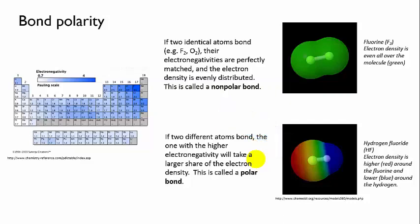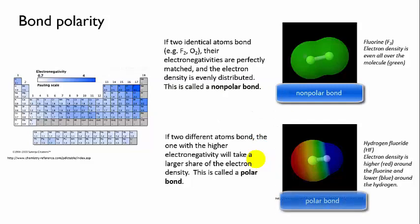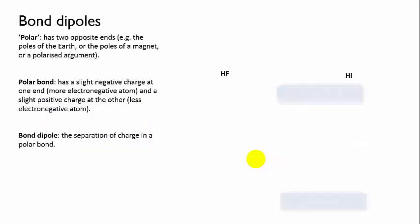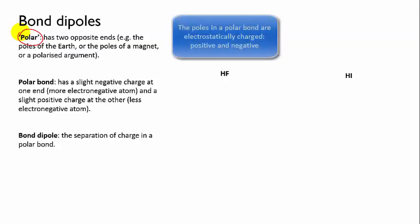When you get uneven electron density in a bond, the bond is called polar. Now if we're going to talk about polar bonds, I need to introduce some new terms. If we refer to something as polar, we generally mean that it has two opposite ends. These could be geographic poles, magnetic poles, philosophical poles, or as in this case electrostatic.